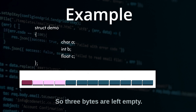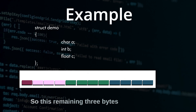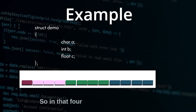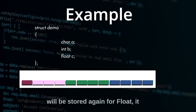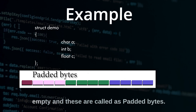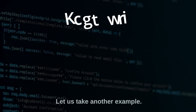Next we have the integer member. The remaining three bytes are not enough, so it will access another four bytes of memory where the integer will be stored. Again for float, it will access another four bytes of memory. In the middle, those three bytes are left empty and these are called padded bytes. This is how structure padding happens.